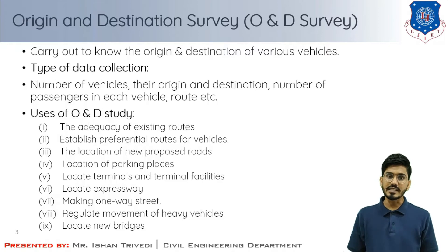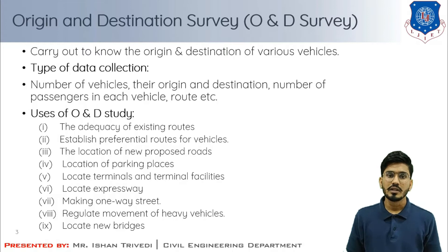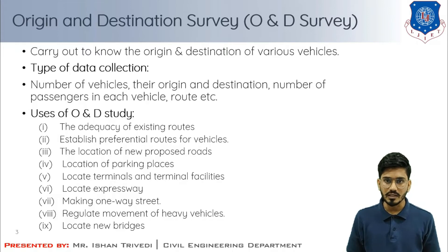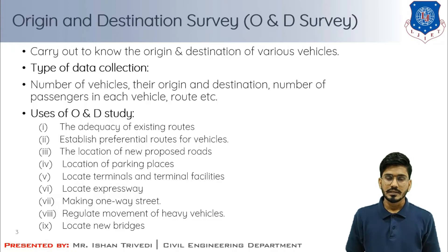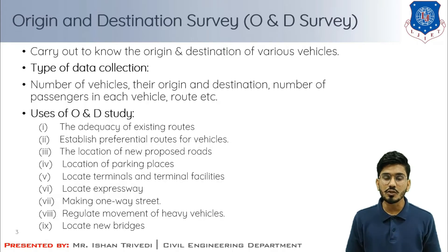There are various methods of OD survey: roadside interview method, license plate method, house interview method, return postcard method, and tag on car method. From this OD survey, I will draw the desire line diagram, which is very useful to plan the highway system in a region.